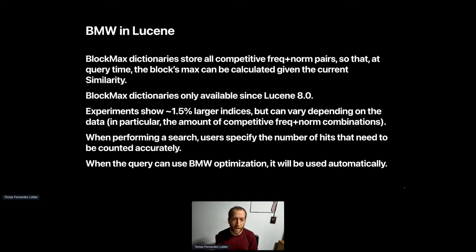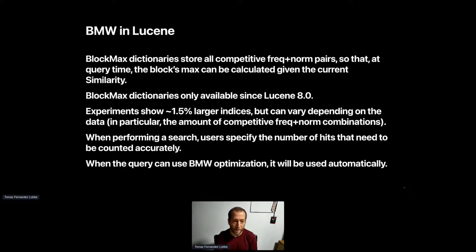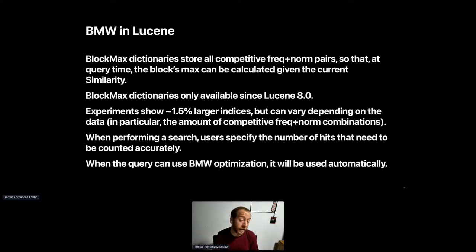Lucene changed the API so that whenever you do a search, in addition to specifying how many documents you want back, you specify how many documents you want counted accurately. If you don't care about hit count at all, set it to the same value as the number of documents you're requesting. Or you can opt out entirely by saying you want all documents counted accurately. By default, Lucene counts accurately up to 1,000. You can do something in between — say, accurate up to 10,000, and then your UI can show a plus sign if there are more. Lucene will use Block-Max WAND if the query allows it.